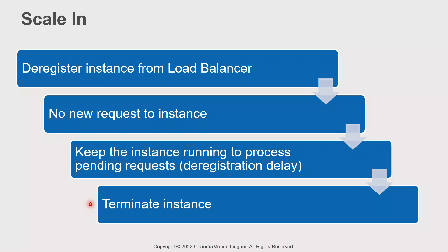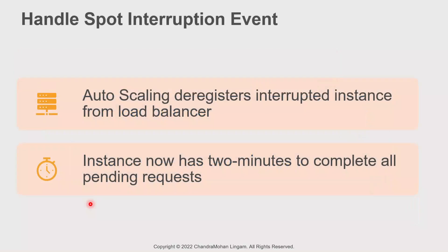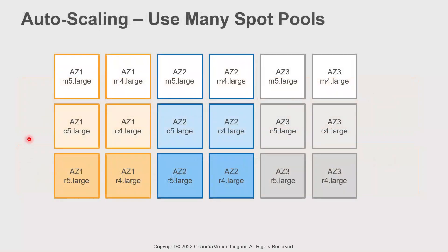So the idea is: when autoscaling receives a spot interruption warning, it will immediately deregister the instance from the load balancer. This gives the server a two-minute window to cleanly process all pending requests and gracefully shut down. The second benefit of autoscaling is we can maintain a fleet of spot instances from different spot pools, which further minimizes the risk of losing too much capacity due to interruptions.